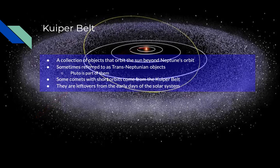Does Pluto's orbit still intersect Neptune's orbit? Yes, it does. No matter what, Pluto's orbit will always be like this — it can't change, because that's just the way it goes around the sun. Despite its orbit being elliptical, it will always remain like this.